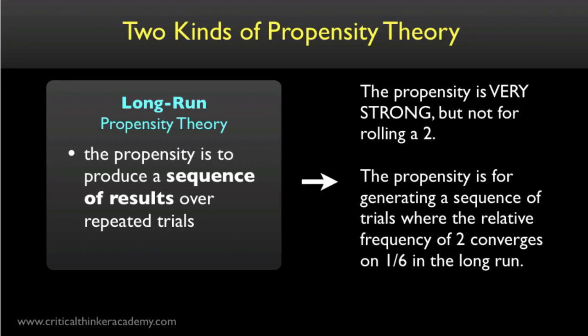For a long-run propensity theorist like Popper, on the other hand, the propensity for rolling a two on a dice roll is not measured by this low number. It's not identified with the probability of rolling a two. The propensity for rolling a two is a very strong, extremely strong tendency, but not for rolling a two. The propensity is the tendency of the dice rolling setup to land two with a long-run relative frequency of 1 in 6, and that is a very, very strong tendency. So we have the same outcome as with the single-case propensity approach. The probability of rolling a two is defined as 1 in 6, but the interpretation of the physical property that is responsible for this outcome is very different.